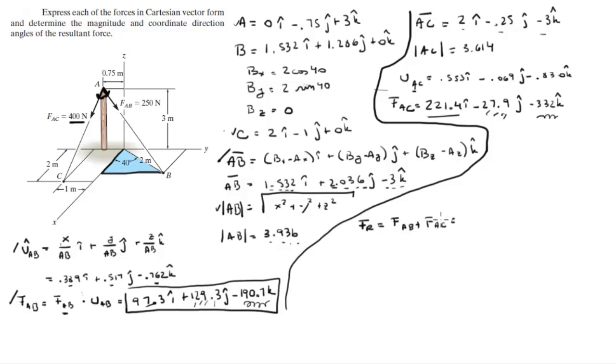And you're going to get that it is equal to 318.7i plus 101.4j minus 527.7k.